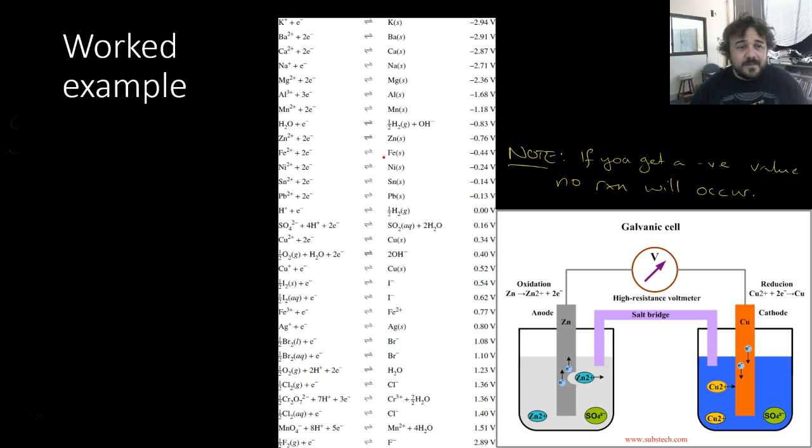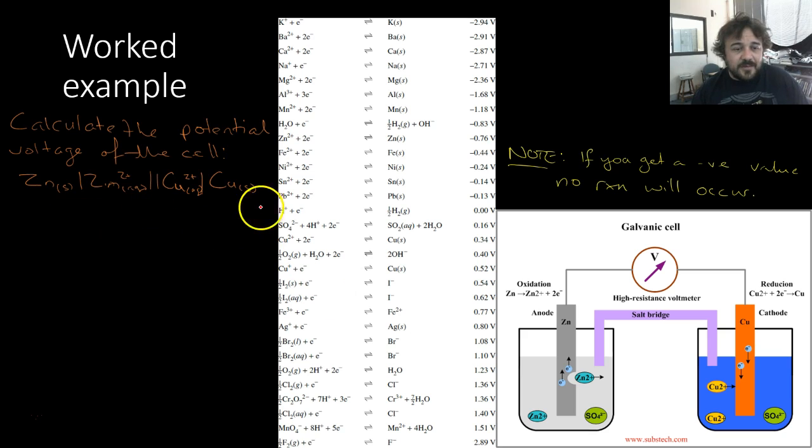So, let's do a work example. First, again, calculate the potential of this experiment here. Now, we write them both out as though they are reducing. Okay, because that's what our table tells us. So, we've got the copper reaction here, and it's plus 3, 4. Zinc 1 minus 0.76.